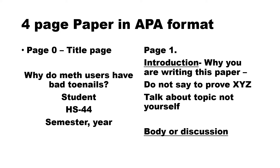Here's a layout of a four-page paper in APA format. This is a hypothetical, somewhat humorous example I made up just to show you the process. Page zero is your title page — here I've given you the example of 'Why do meth users have bad toenails?' — followed by the title of the paper, your name, the class HS44, the semester, and the year.